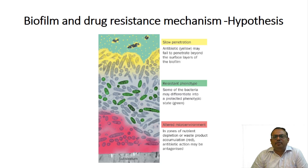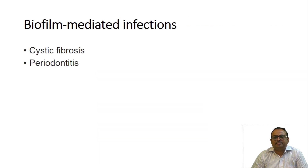The altered microenvironment hypothesis states that the complexity of the biofilm makes the inner zone completely nutrient deficient, and the accumulation of waste products leads to an entirely altered microenvironment — where the pH or salt concentration may be different — which antagonizes the antimicrobial. These are the common resistance mechanisms.